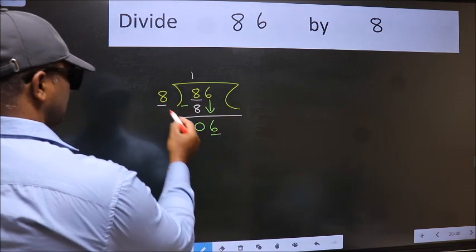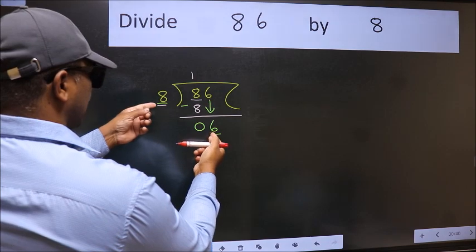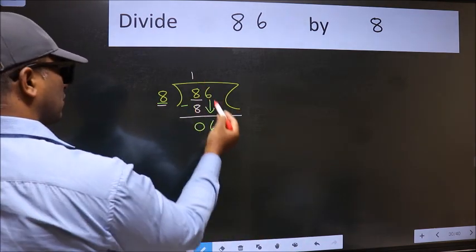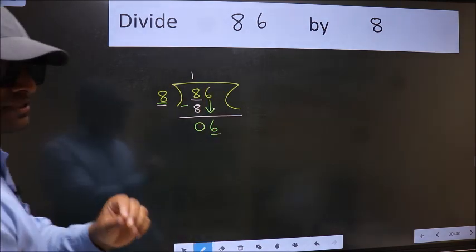Here we have 6 and here 8. 6 is smaller than 8. So what many do is, they directly put dot, take 0. Which is wrong.